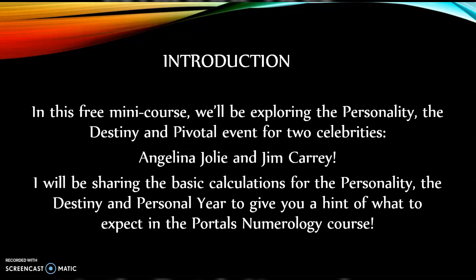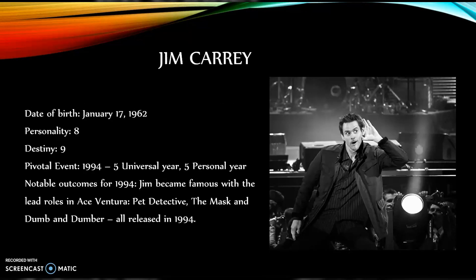In this free mini-course we'll be exploring the personality, the destiny, and pivotal event for two celebrities: Angelina Jolie and Jim Carey. I will be sharing the basic calculations for the personality, the destiny, and personal year to give you a hint of what to expect in the Portals Numerology course. Jim Carey's date of birth is January the 17th, 1962. Personality: 8. Destiny: 9. Pivotal event: 1994, which was a five universal year and for Jim a five personal year. Notable outcome: Jim became famous with the lead roles in Ace Ventura: Pet Detective, The Mask, and Dumb and Dumber — all released in 1994.